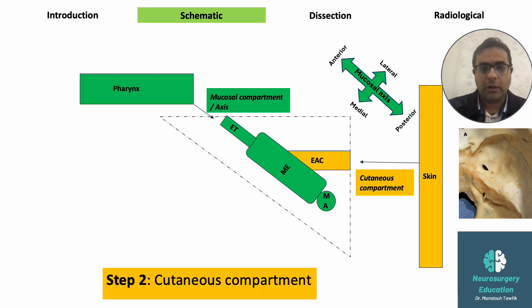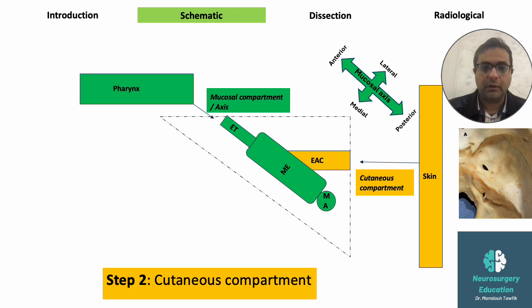The second compartment is the cutaneous compartment. It's an invagination of skin on the lateral surface of the head into the base of the pyramid. It is thus lined with skin and filled with air. It lies lateral to the middle ear and meets the middle ear from laterally at the tympanic membrane.